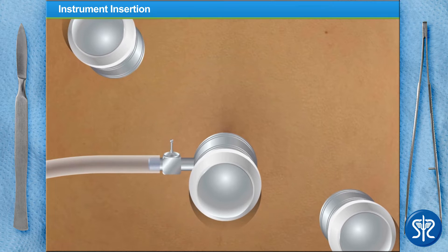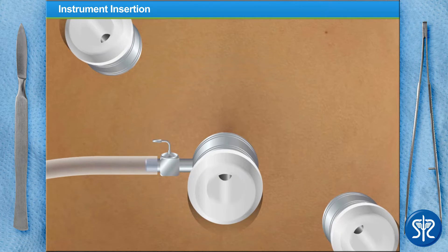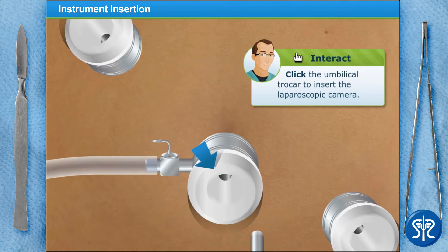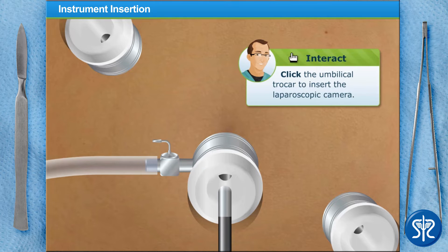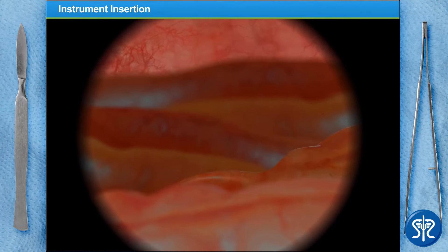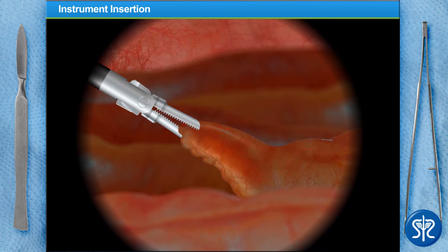Next, we need to insert our laparoscopic camera through the umbilical trocars. Images from the camera are projected on our monitor to allow us to inspect our patient's abdomen and confirm that the appendix is infected. The inflamed and swollen area you see is the patient's appendix. Our next step is to remove it before it becomes an even greater problem for our patient.